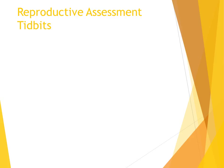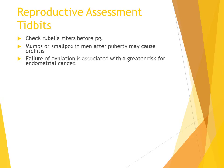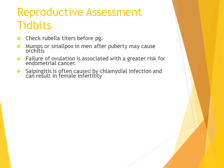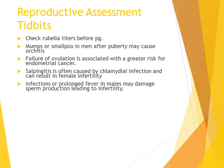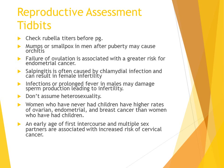Reproductive assessment tidbits: Check rubella titers before pregnancy. Mumps or smallpox in men after puberty may cause orchitis. Failure of ovulation is associated with a greater risk for endometrial cancer. Salpingitis, often caused by chlamydial infection, can result in female infertility. Infections or prolonged fever in males may damage sperm production leading to infertility. Do not assume patients are heterosexual. Women who have never had children have higher rates of ovarian, endometrial, and breast cancer. An early age of first intercourse and multiple sex partners are associated with increased risk of cervical cancer.